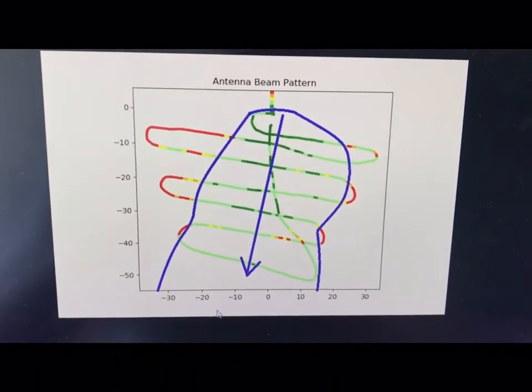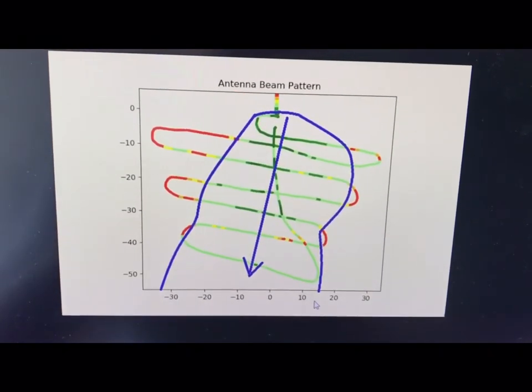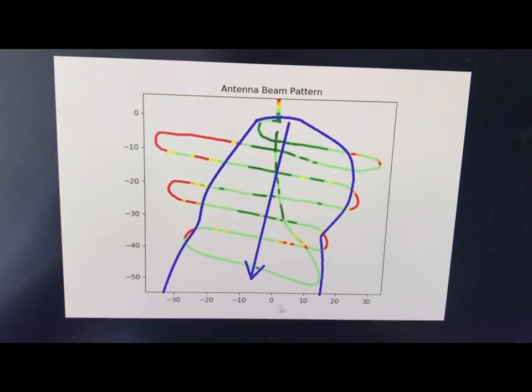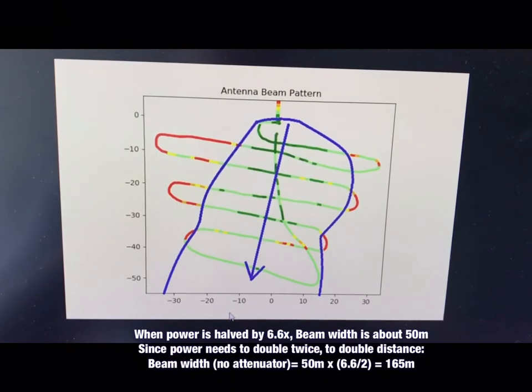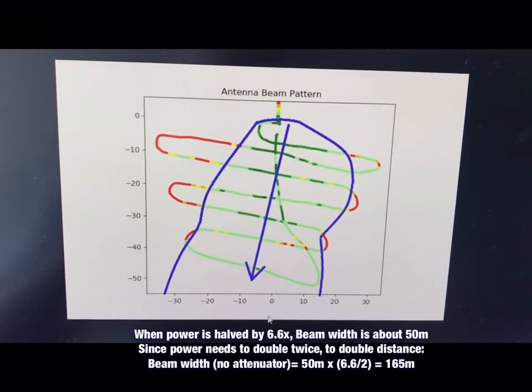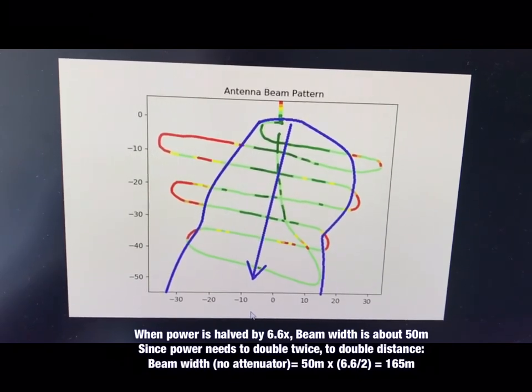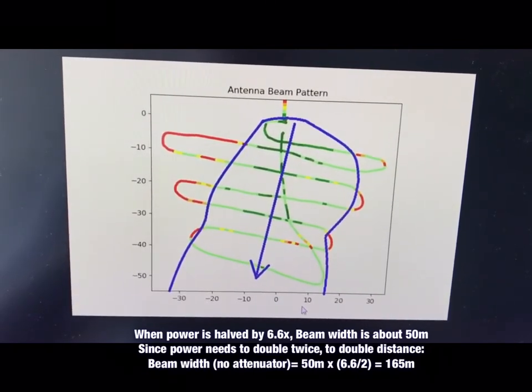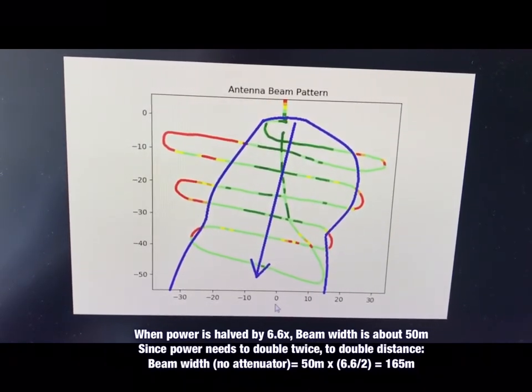If you look at the X-axis, the beam width of this antenna is about 45 meters, and that's because I've attenuated the transmission power from 200 milliwatts to under 2 milliwatts of power. That's nearly about seven times reduction in power. Since to double the distance we need to increase the power by four times, at 200 milliwatts the beam width should be about 160 meters.